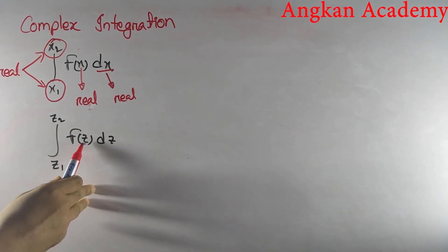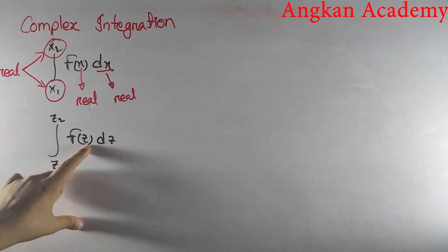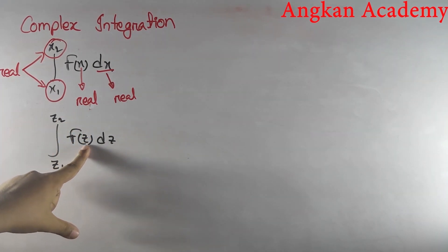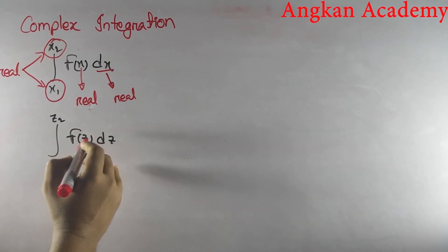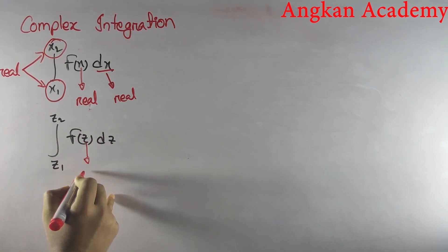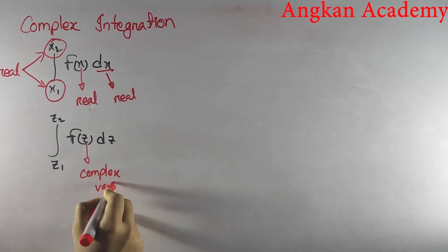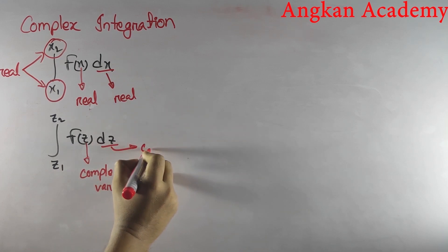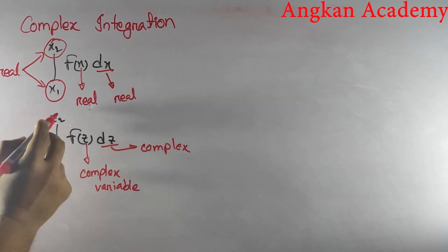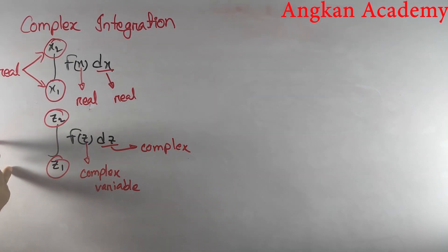But now in complex integration we have the integral from z1 to z2 of f(z)dz. Here z is a complex number used as a variable in this function — that's why z is called a complex variable. dz is complex, and the two limits z1 and z2 are also complex numbers.